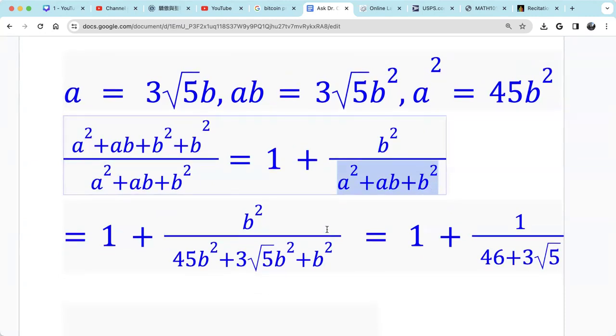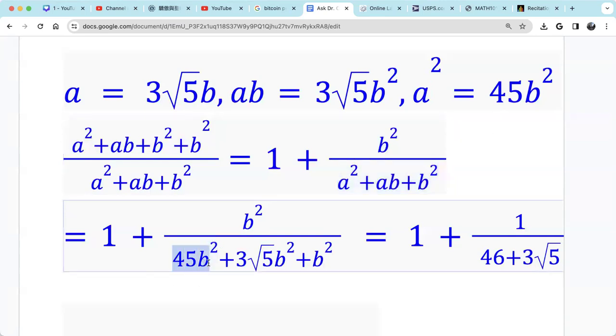Now let's substitute. So B squared is B squared. And A squared is 45B squared. And AB, A times B, is 3 radical 5B squared, then plus B squared. So everything in B squared.